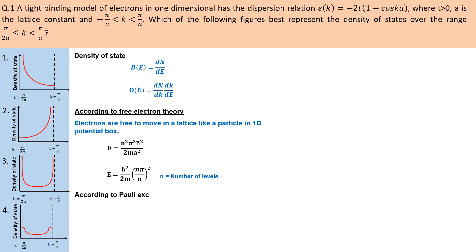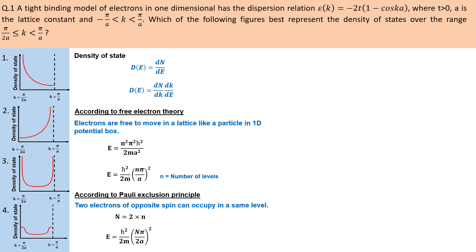In free electron theory, if there are two electrons in one level with opposite spins, then for n levels there are 2n electrons total. If we substitute the energy and rearrange, then n equals pi by 2a, which gives the Fermi radius. Rearranging and differentiating gives dn/dk equals 2a by pi.